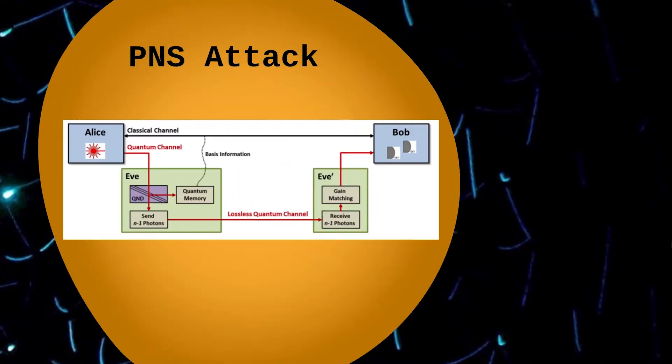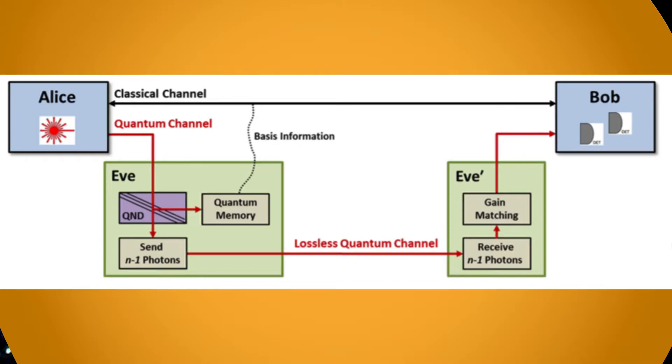The PNS attack is a more complex and powerful theoretical attack that obeys the laws of quantum mechanics, but it also requires advanced technologies which are not yet commercially available. In this configuration, Eve replaces the quantum channel with a lossless channel.